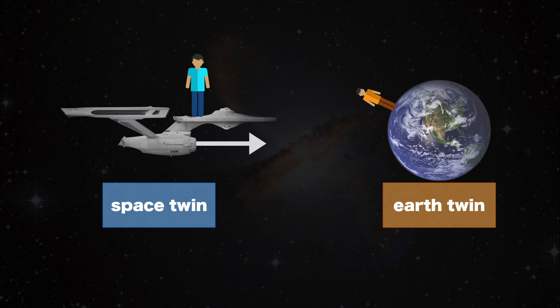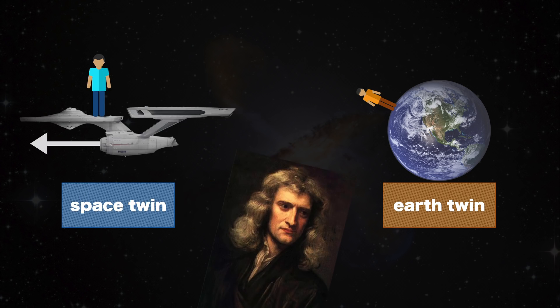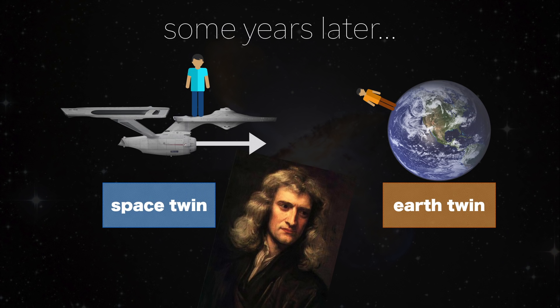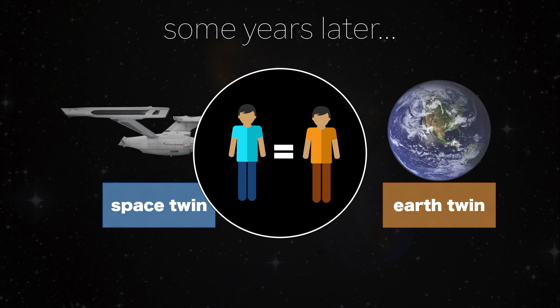Meanwhile, Earth Twin stays in order to not miss the next 10 seasons of Game of Thrones. Under Newtonian law, when Space Twin returns from his trip, he and his brother should be the same age.